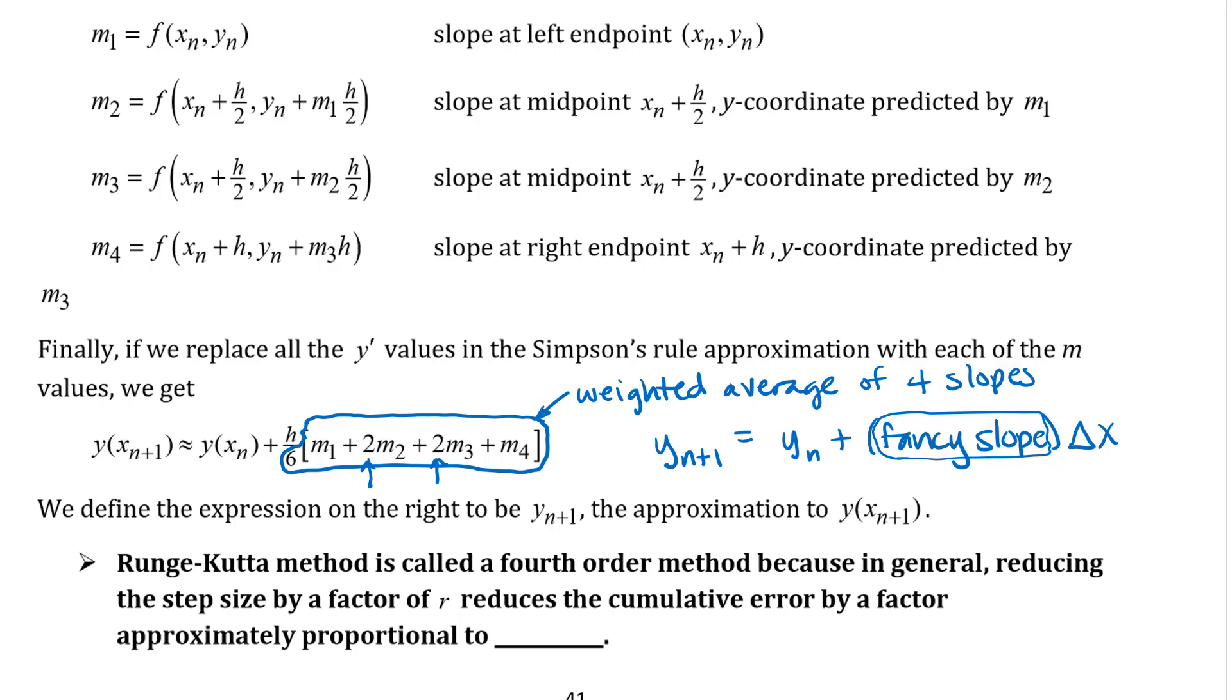So a lot more calculations at each iteration but in theory this should give you a more accurate result. This is called a fourth order. Remember that the improved Euler method was called a second order method. This is a fourth order method because in general when we reduce the step size by a factor of four the cumulative error is reduced by a factor approximately proportional to h to the fourth. So in general a much more accurate method but there is a lot more calculation at each step. So there is some trade-off between the efficiency of the calculation and the accuracy of the results. Alright, let's look at the app that we've been using and look at some numerical values for that.